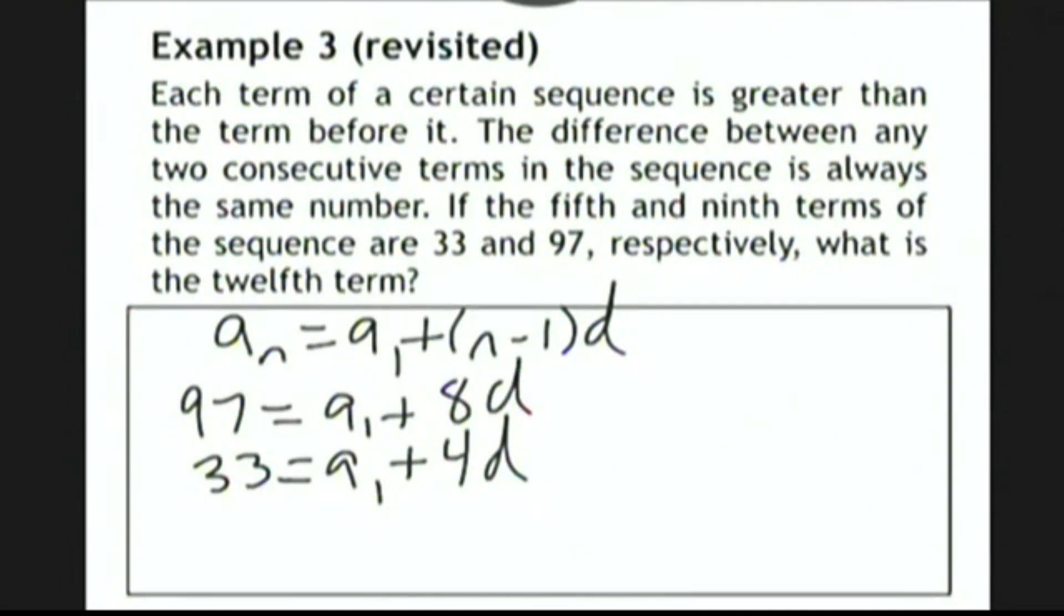And the ninth term of the sequence is 97, so we have 97 = a_1 + 8d. Once again, it's the ninth term, so n minus 1 is 8. I'm now going to subtract the two equations to find the common difference.